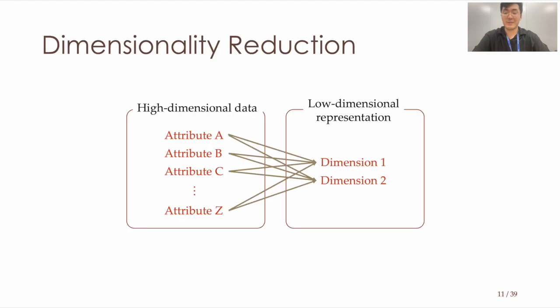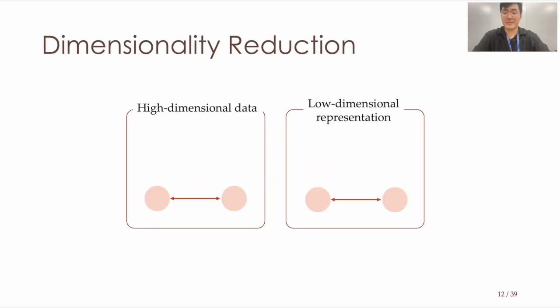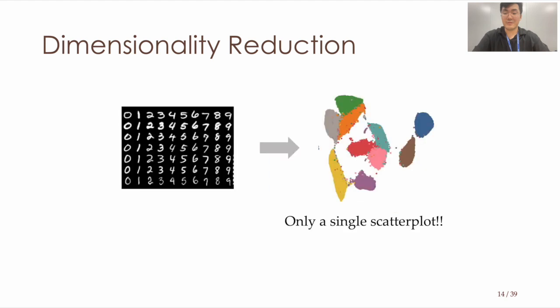The objective of dimensionality reduction is simple. Distant points in the original data should remain distant in the reduced space, and points close to each other in the original data should also stay close in the embedding. In this way, dimensionality reduction produces a 2D representation that captures the structure of the original high-dimensional dataset. This visual representation, often plotted as a scatterplot, allows data analysts to quickly examine data patterns.